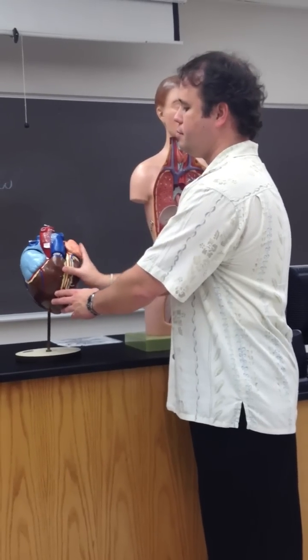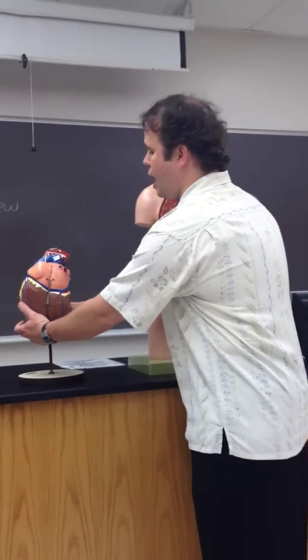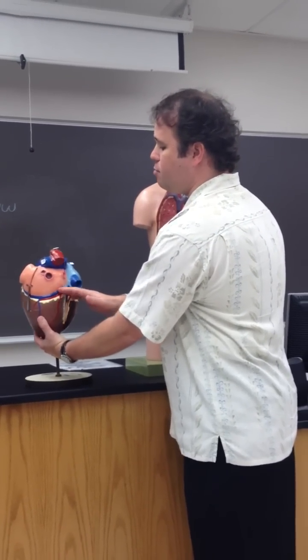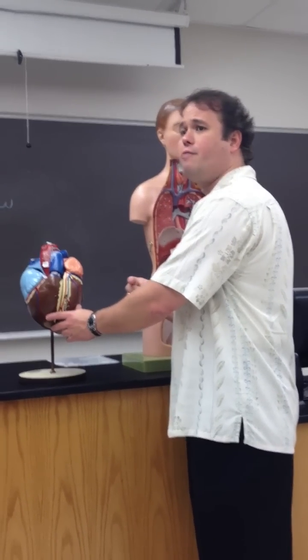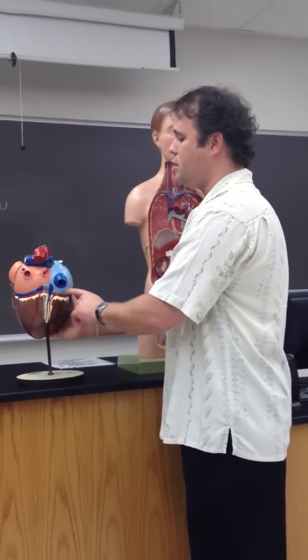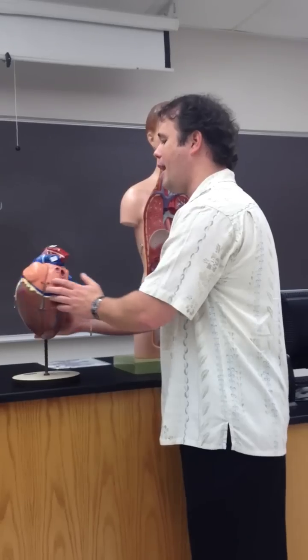If the coronary arteries fed the heart, then what drains the heart? The coronary sinus is going to drain blood from the heart, and it's going to receive blood from the small, the great, and the middle cardiac veins. The middle cardiac vein, the small cardiac vein, and the great cardiac vein all dump into the coronary sinus on the posterior heart, which then dumps into the right atrium. All blood returning from the body or from the heart dumps into the right atrium.